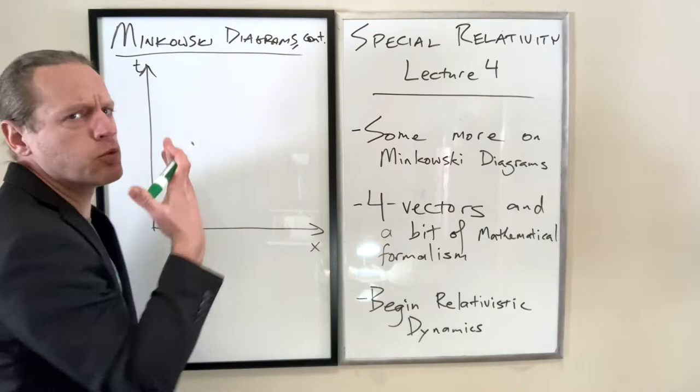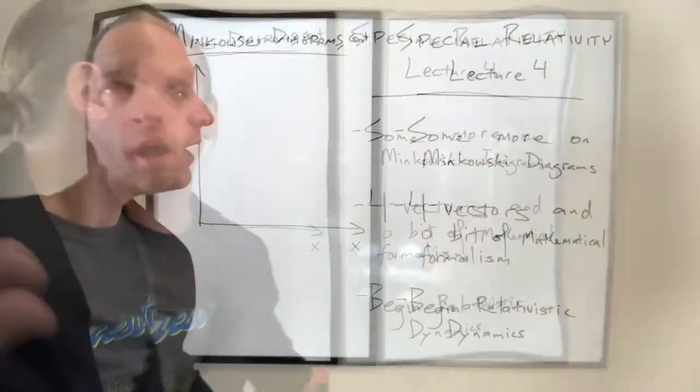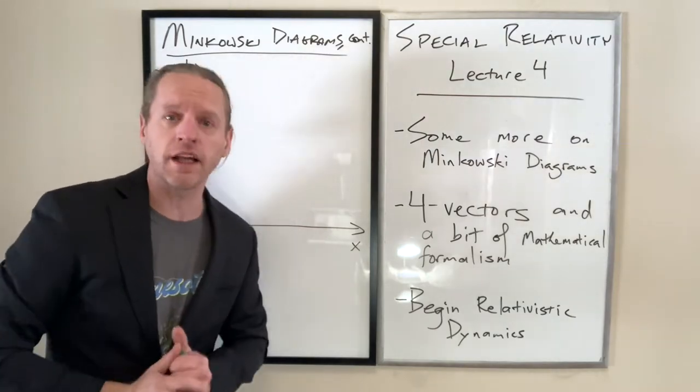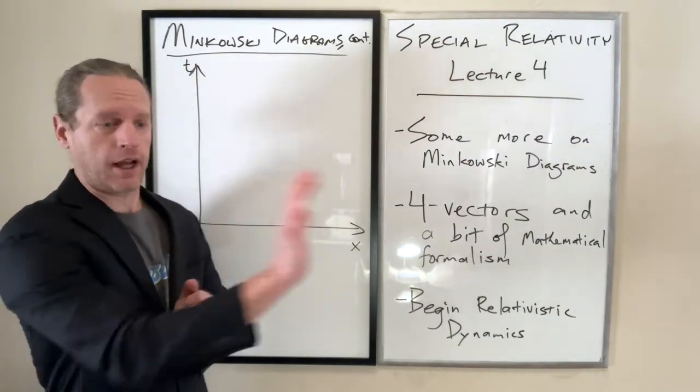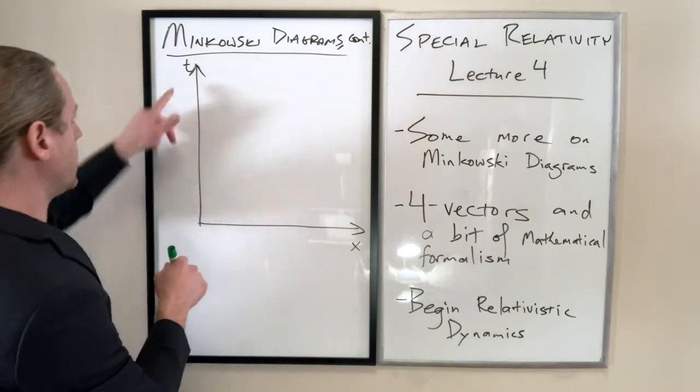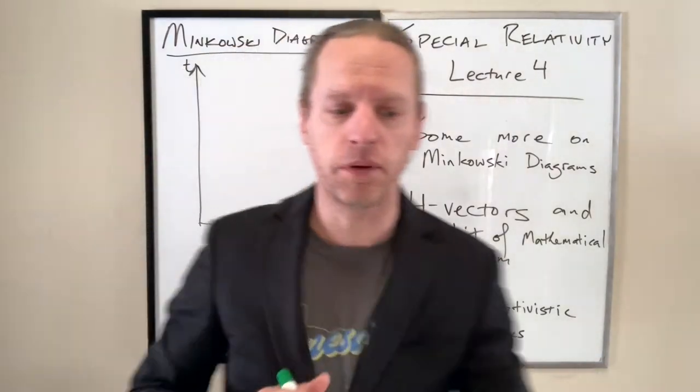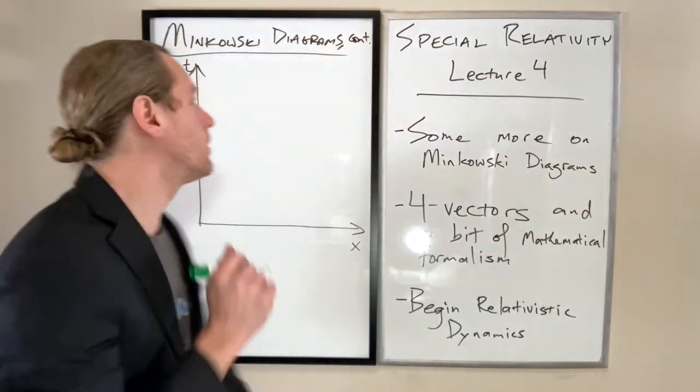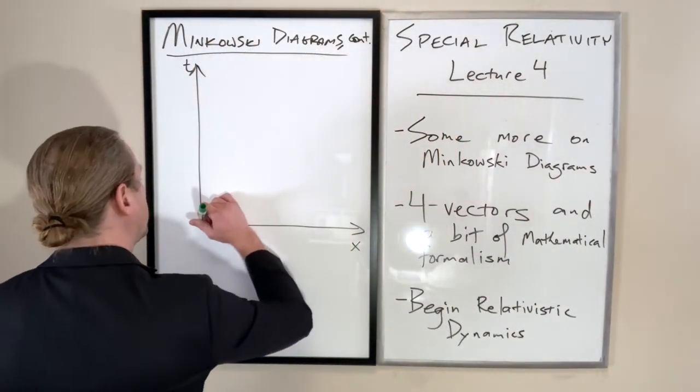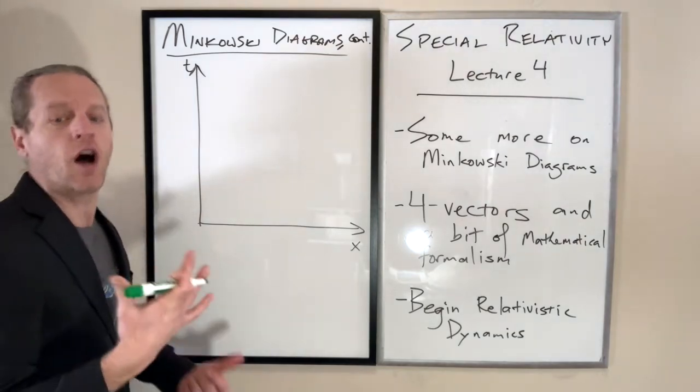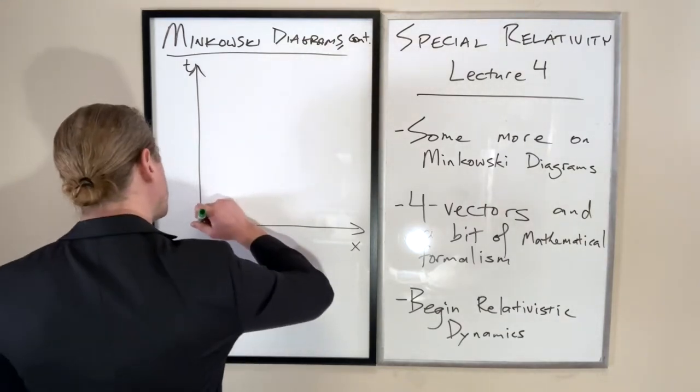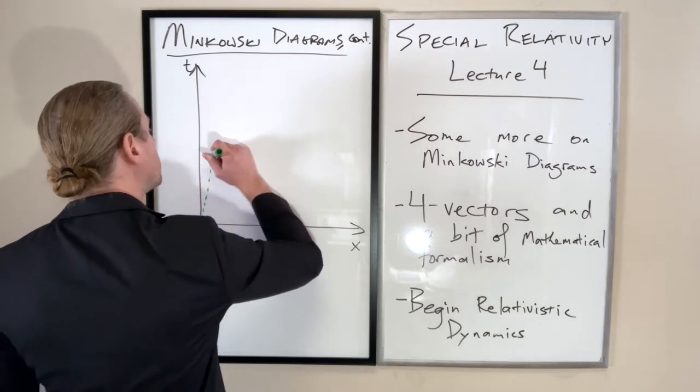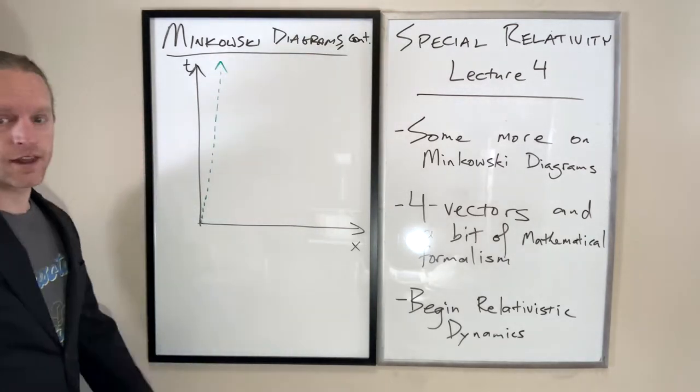Imagine we take any arbitrary object and launch it with a velocity v, just along the x-axis, according to an observer in the s or black reference frame. We're going to launch some object at velocity beta, and it will have its own world line that looks like that.